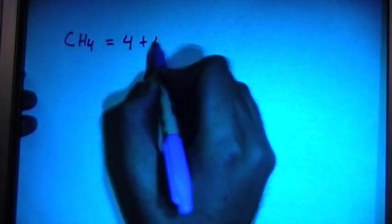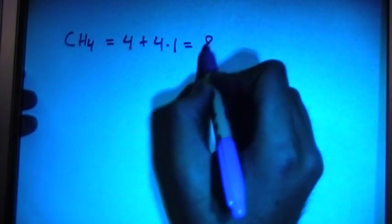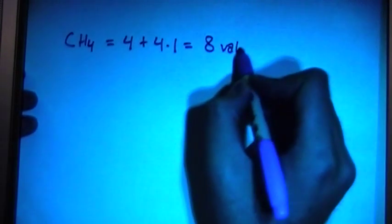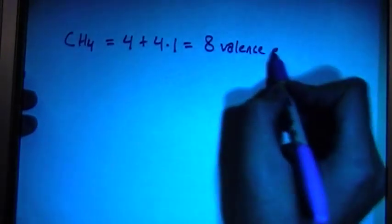Hey guys, today in this video I'm going to show you how to draw the Lewis dot structure for methane, which is CH4. Methane comes with CH4, and in terms of electrons, you have four electrons from the carbon, plus four times one electron from each hydrogen. That's going to give us a total of eight valence electrons.